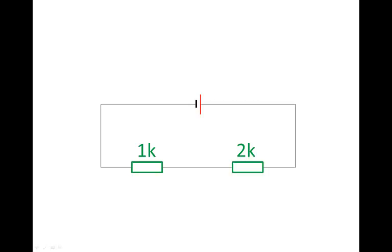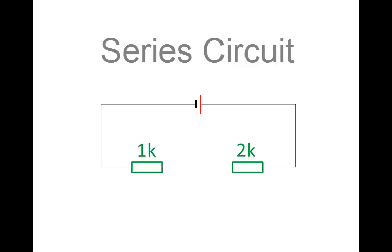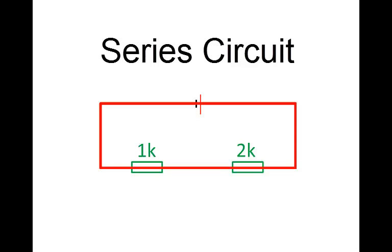Here we have a series circuit. There's a 9V cell in series with a 2K resistor and a 1K resistor. We know that it's a series circuit because there aren't any branches in the circuit. All the charge has to flow in one path all around the circuit. The components follow one another, one after the other.